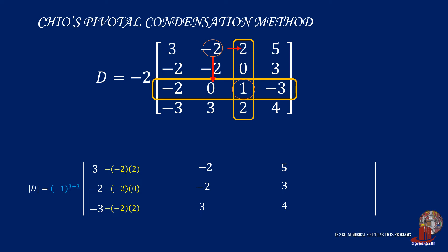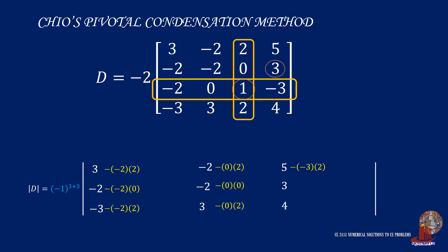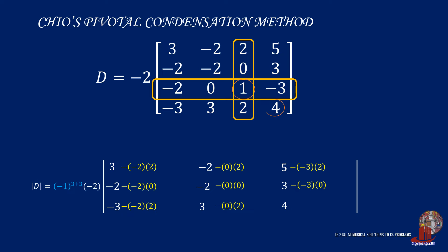The third element in the first column will be subtracted by negative 2 times 2. On to the next column, we start on the first row with element negative 2 subtracted by 0 times 2. For the new element 2, the reflected factors are 0 and 0. The last element down the second column is 3, and this is subtracted by 0 times 2. On to the third column: the first element on top is subtracted by negative 3 times 2. Next is the element valued at 3, decreased by negative 3 times 0. The last element in the third column is 4 minus negative 3 times 2. Simplify each element and have the following new elements.